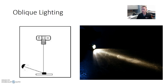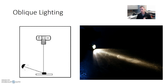So oblique lighting — we talked a little bit about this in the intro to forensic science class. What we're doing is we're taking a light source, whether it's the external flash unit or a flashlight, and holding it off to the side so the light shines across an object. You can kind of see in the illustration here — we've got a light source coming off to the side, shining across the object, and the camera's looking directly at the object.